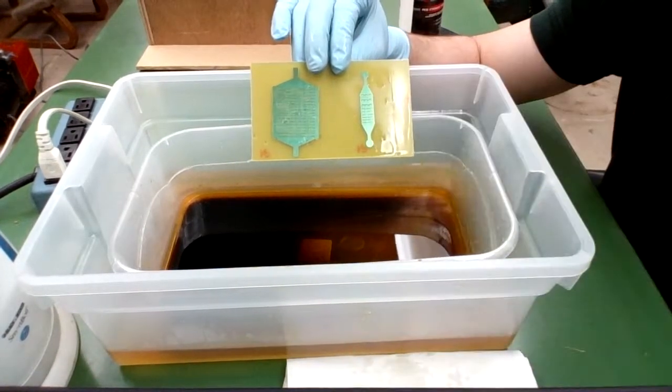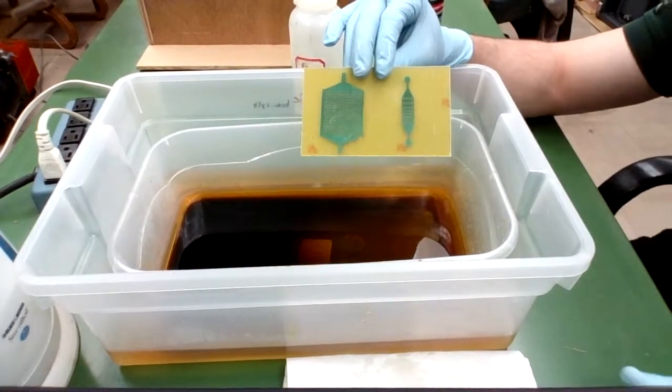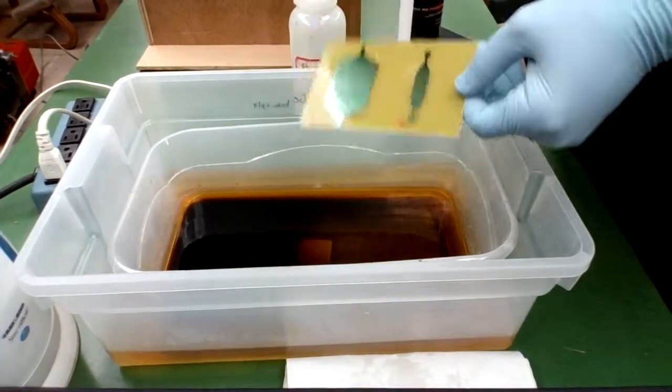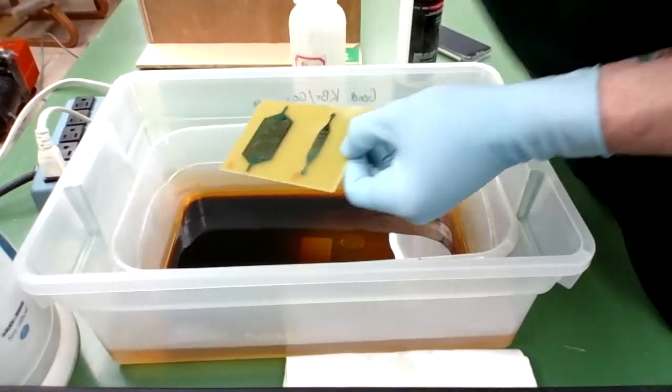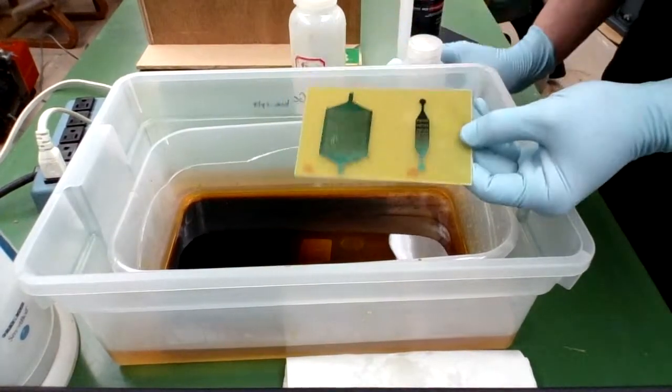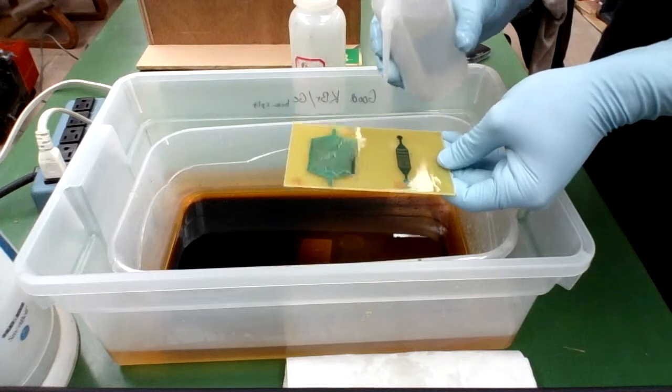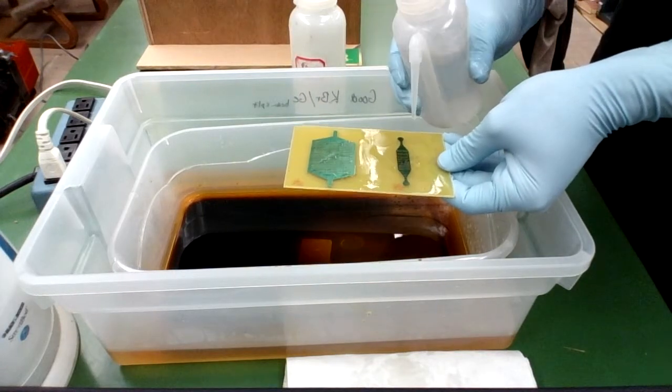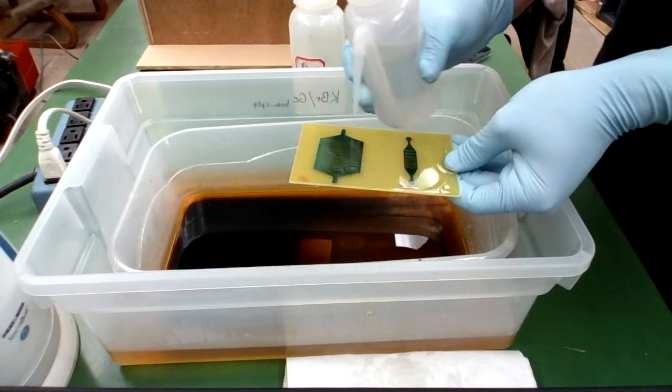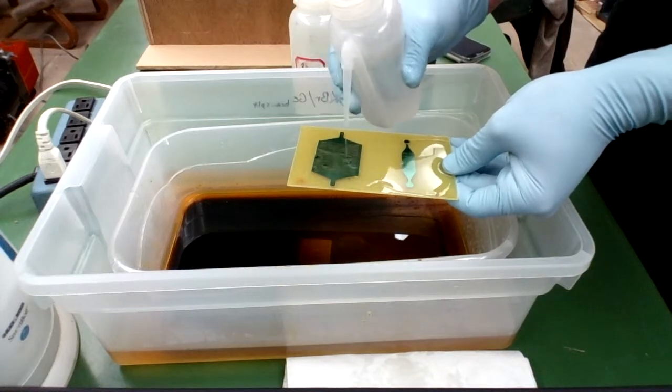And that is a very easy thing to do. All you need is isopropyl alcohol or any rubbing alcohol. So you just spray it on the design and you can actually see the photoresist dissolve before your eyes.